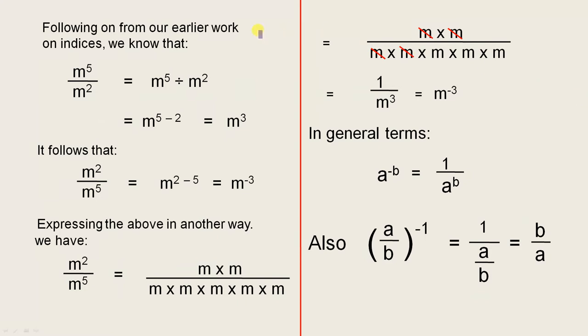Following on from our earlier work on indices, we know that m to the power of 5 divided by m to the power of 2, we can write it this way showing the division sign. When we're dividing terms where the bases are the same, we subtract the indices. So 5 minus 2, the index here is 5, that's a 2, so it's m to the 5 minus 2, which is m to the power of 3.